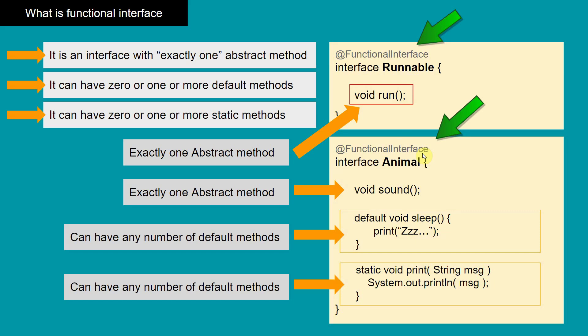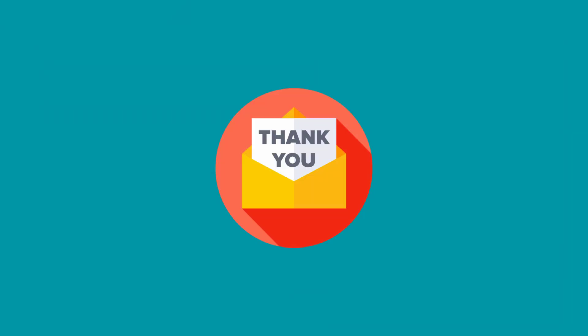You can see the @FunctionalInterface annotation here. This annotation is not mandatory — even without it, the interface is perfectly valid as a functional interface. The reason to add @FunctionalInterface is that if you try to add a second abstract method, the compiler will prevent it. So for safety, to avoid accidentally adding an abstract method, we should always write @FunctionalInterface on the interface. In the next video we are going to see predefined functional interfaces. Thank you, bye bye.